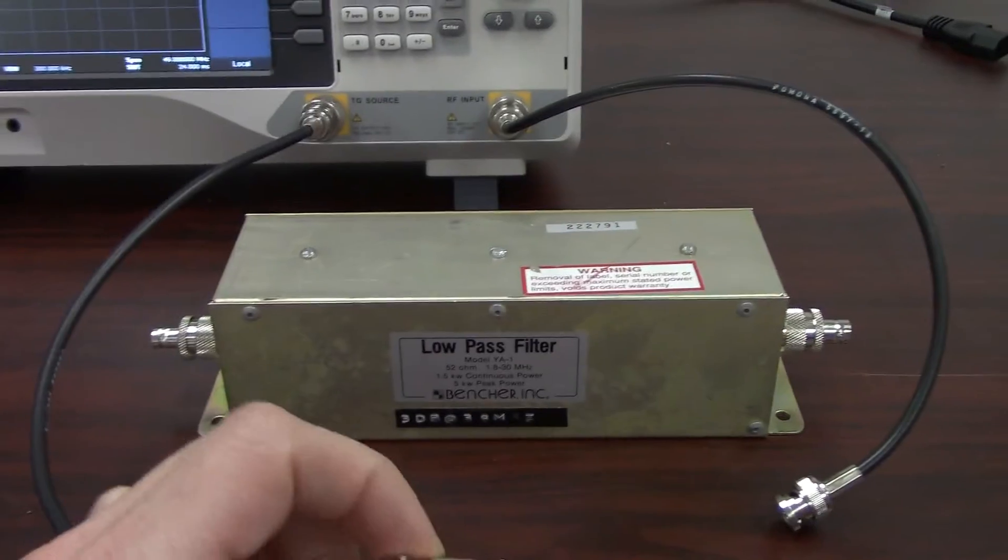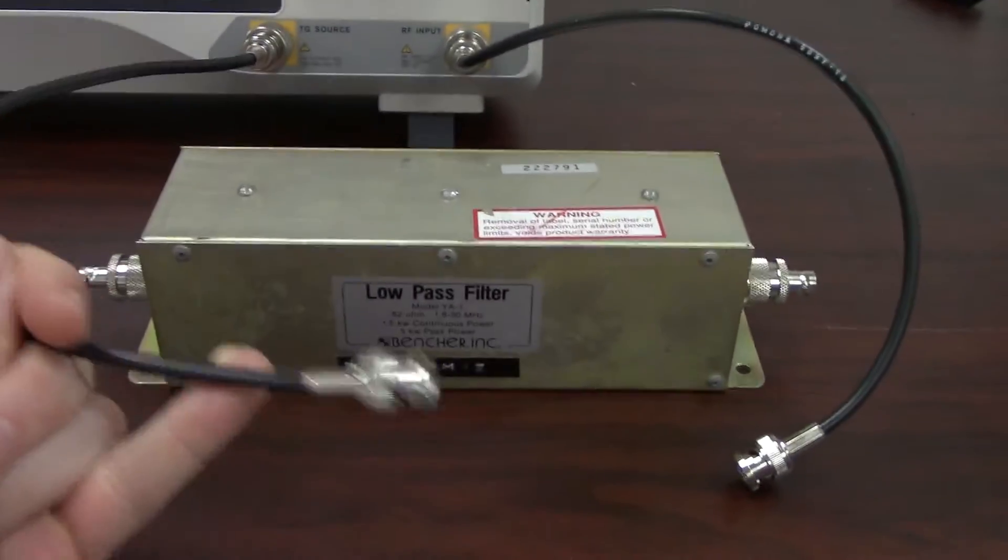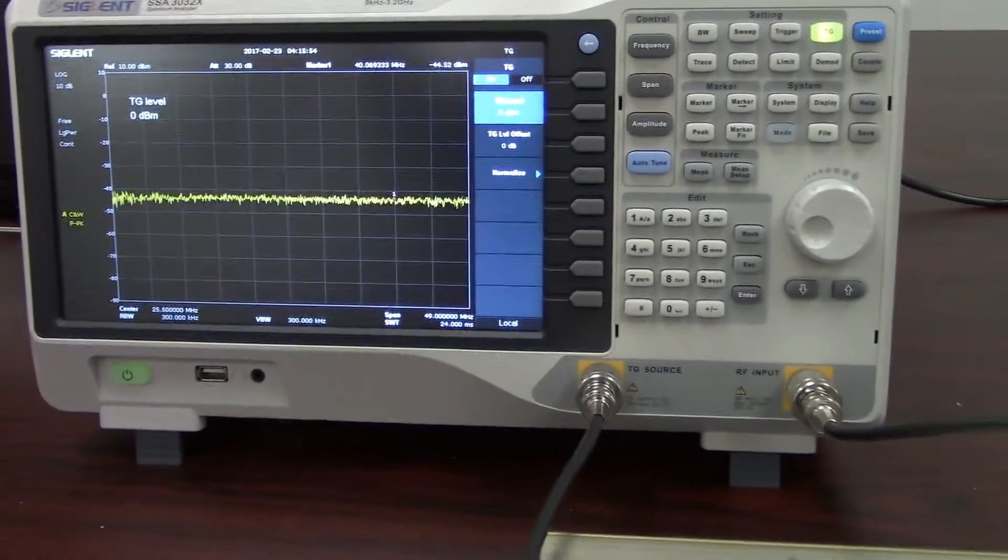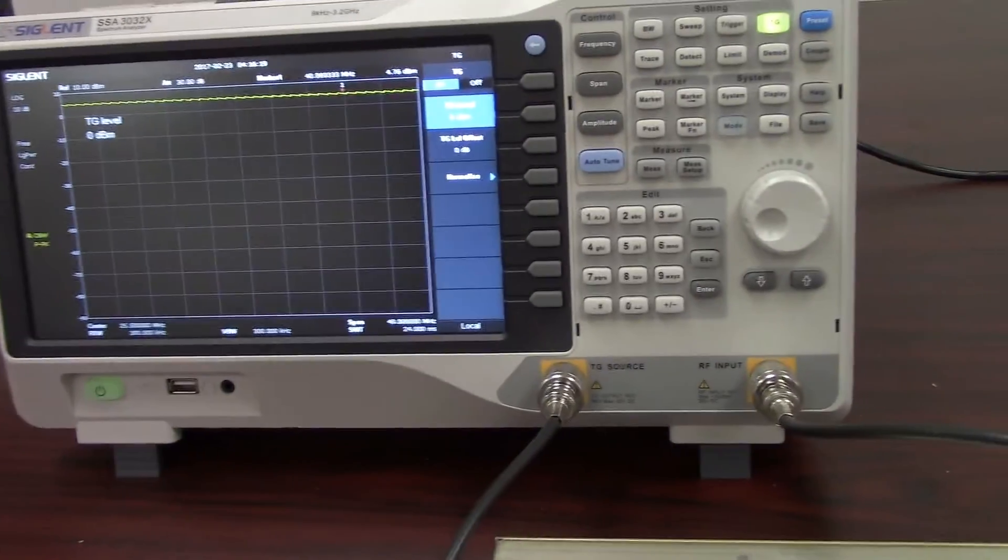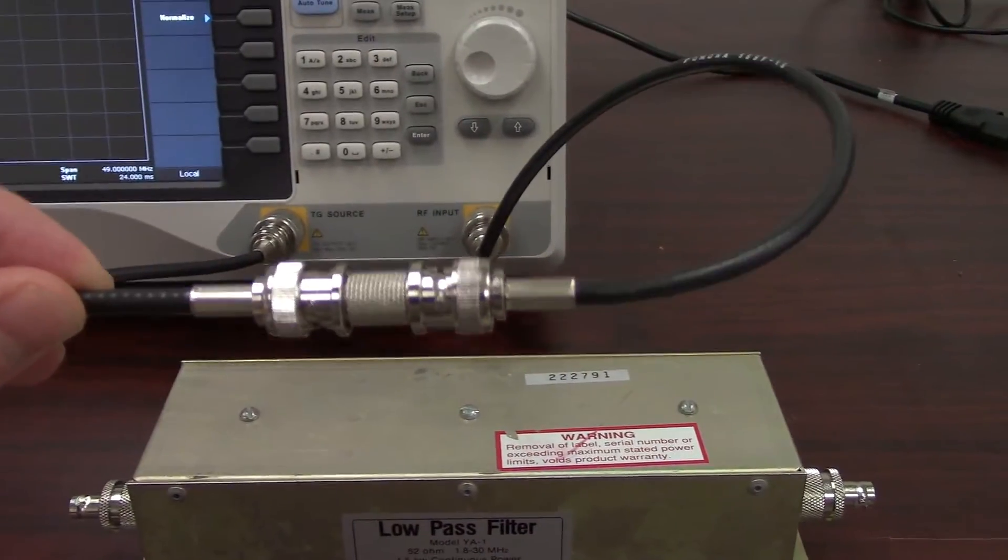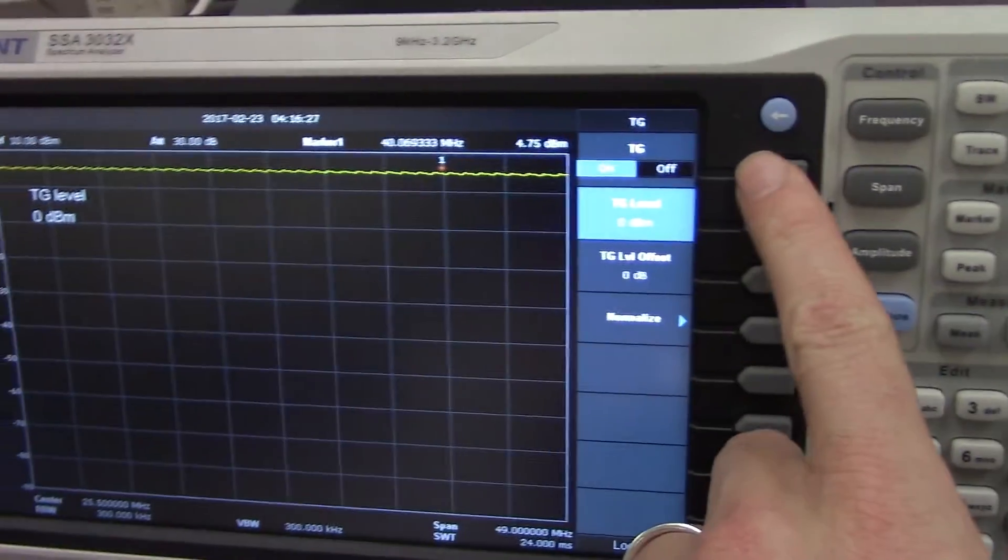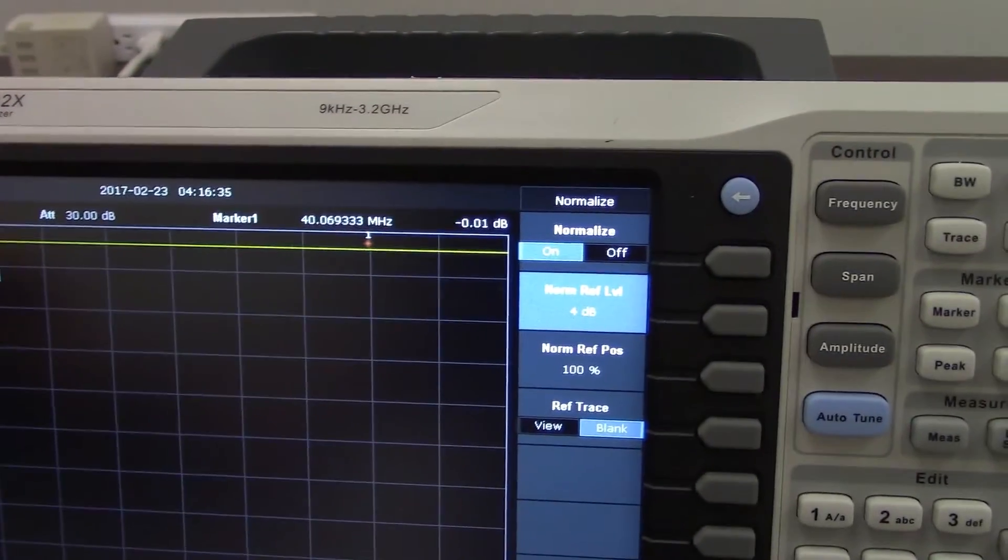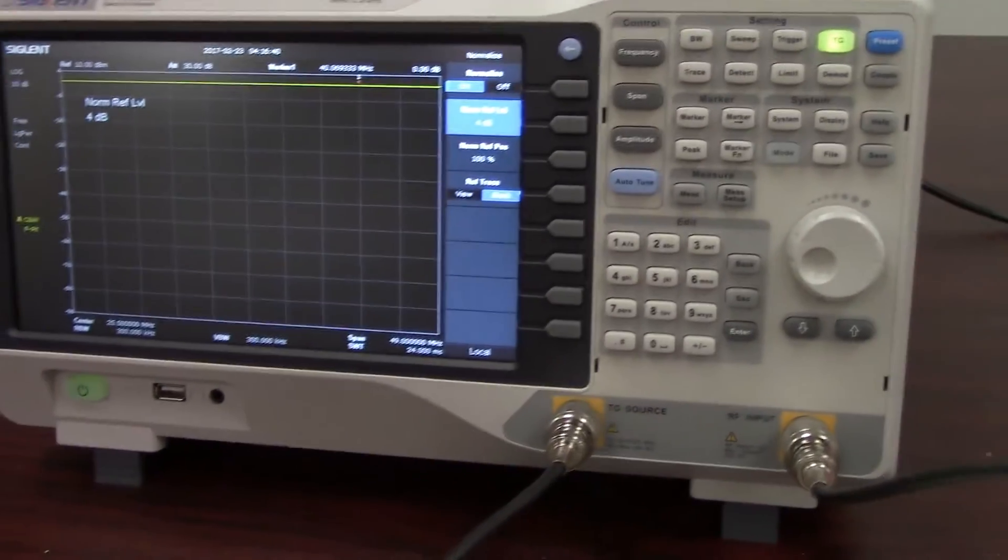The BNC barrel, we're going to be able to calibrate. So, normalizing, we're going to be able to remove the reflection and absorption effects of the cabling by doing the normalization process. Just one second, I'm going to put this barrel in and be right back. Okay, now we're back. I have put the barrel adapter in and now I'm going to turn on the tracking generator. So we've got the tracking generator on. And now I'm going to press normalize and turn the normalize trace on. And now you'll see that the line has gone flat and we are at 0 dB.